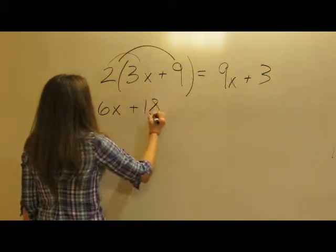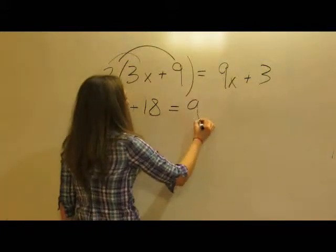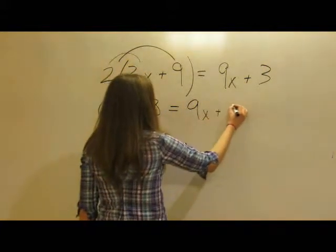So now this side of the equation is 6x plus 18 and then equals 9x plus 3.